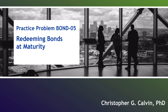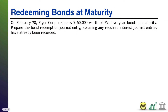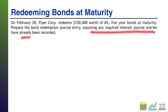Hi everyone, I have a quick practice problem for you today - Bond 05 - where we are going to journalize redeeming bonds at maturity. On February 28th, Flyer Corp redeems $150,000 worth of six percent, five-year bonds at maturity. Prepare the bond redemption journal entry. For ease, you can assume that any required interest journal entries have already been done. Take a moment, try this out on your own, pause the video, and when you're ready come on back.